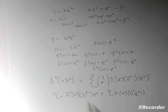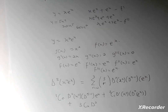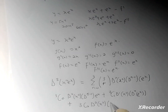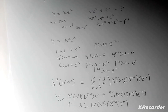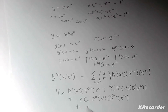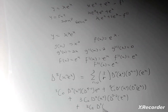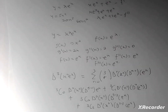Continuing: for r = 2, plus 3C2 times d²(x²) times d¹(e^x). And for the last term, r = 3: plus 3C3 times d³(x²) times d⁰(e^x). That is our total expression from the summation, expanding all four terms.